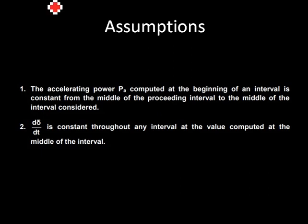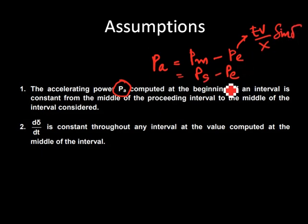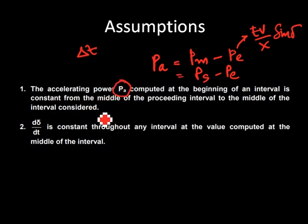We move forward with some assumptions. The first is the accelerating power Pa. For a generator, Pa equals Pm minus Pe — mechanical power minus electrical output. Pe is given by EV/X times sine delta. The entire process is divided into time intervals delta-t, and at each interval you calculate accelerating power and d(delta)/dt. The accelerating power compared to the beginning of the interval is assumed constant.